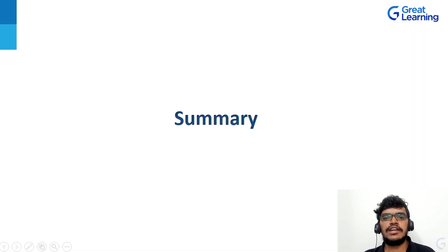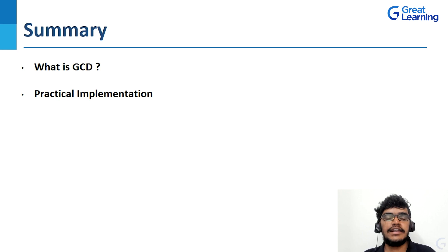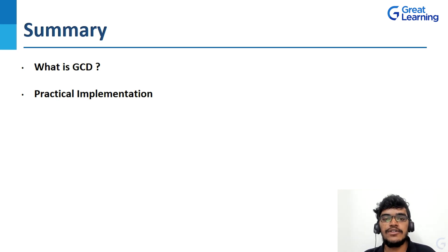Let's take a quick recap for GCD of two numbers. We started by knowing what is GCD — GCD is nothing but HCF, the highest common factor. Then we learned how to develop a logic for GCD of two numbers, and we also saw the practical implementation in Jupyter Notebook.